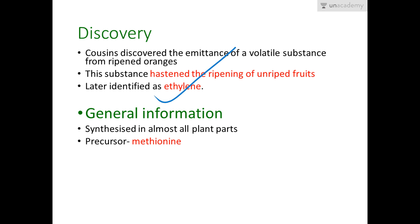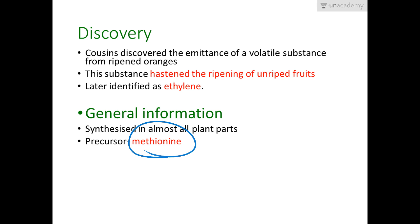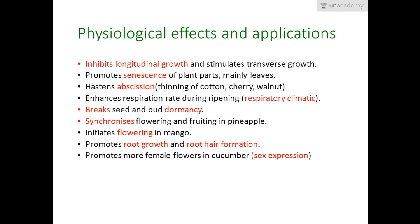The general information about ethylene is that it is synthesized in almost all plant parts. The precursor required for the preparation of ethylene is methionine — methionine is an organic compound from which ethylene is produced. Of course, ethylene is also an organic compound, as all plant growth regulators are organic substances.